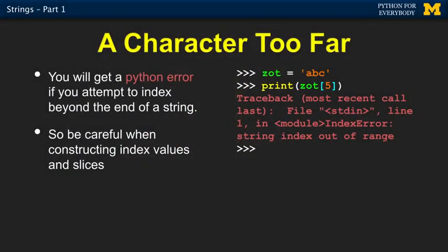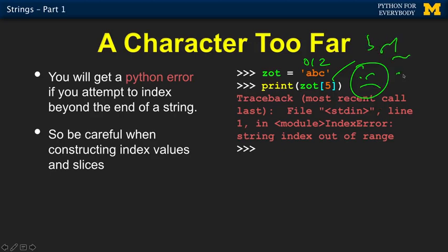It wouldn't be Python if we didn't have a traceback. In this one I'm making a mistake — I'm going beyond the string 'ABC', which is zero, one, and two. So referencing sub five gives us an index error: string index out of range. We're doing an index operator, a lookup operator, or a sub-operator. That's just a thing you're not supposed to do. After a while, you kind of get used to the idea that Python is just going to traceback on you from time to time.